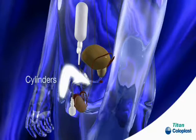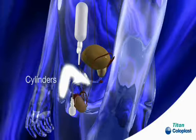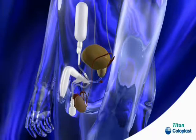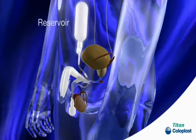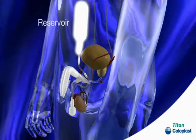The inflatable cylinders are located in your penis and as they fill an erection will occur. When fluid is returned to the reservoir a flaccid result is achieved.